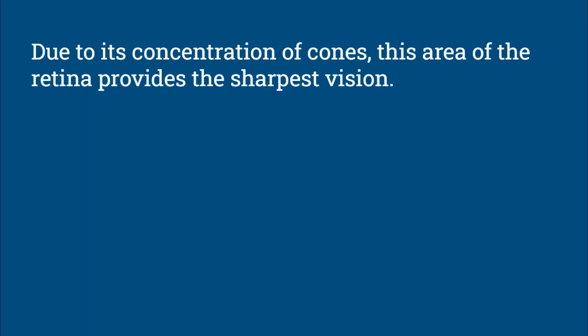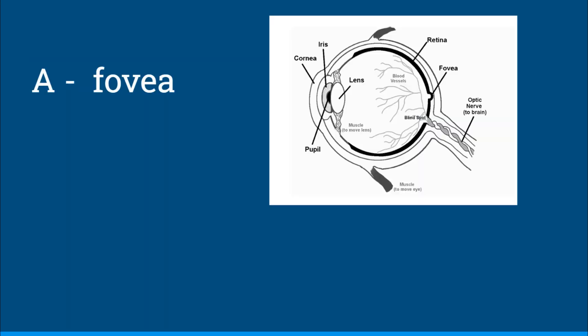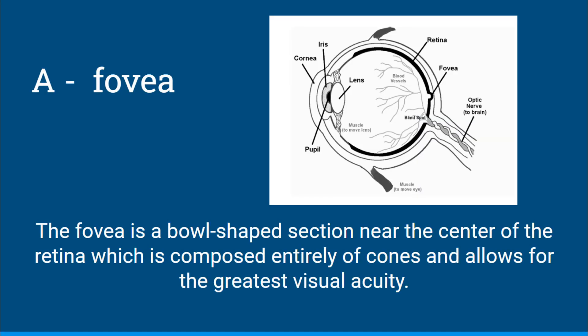Due to its concentration of cones, this area of the retina provides the sharpest vision. Is this the fovea, the cornea, the receptive field, the iris, or the blind spot? The answer is A, the fovea. The fovea is a bowl-shaped section near the center of the retina which is composed entirely of cones and allows for the greatest visual acuity.